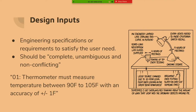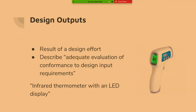Those are all really great points about the design inputs — it's not necessarily just what the device needs to do, but also environmental and manufacturing considerations. You take those inputs and the design outputs are what you actually end up with — the physical characteristics, the actual design of the product. Following that same train of thought: must measure 90°F to 105°F, your design output is an infrared thermometer with an LED display.